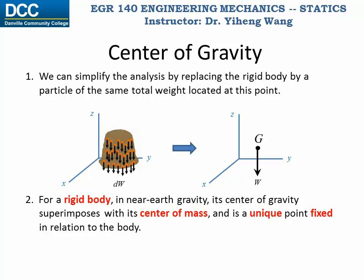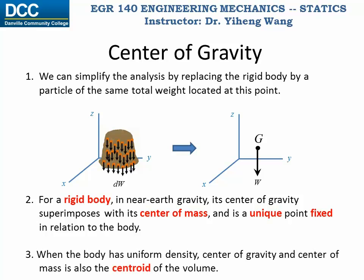Please be noted that this point could be outside of the physical body. For example, for a boomerang, you can imagine its mass center being outside of its body. Also, when a rigid body has uniform density, the center of mass — which is also the center of gravity — superimposes with the centroid, which is the geometric center of the body.